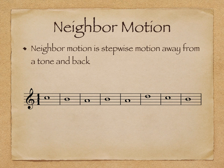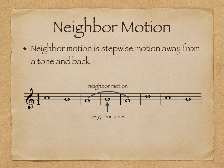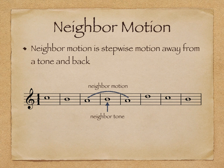Another type of motion is neighbor motion — stepwise motion away from a tone and back again. In our example, we have neighbor motion in the middle of our melody, from A to B and back to A again. All three tones are involved in the neighbor motion, and the center tone — B in this case — is called the neighbor tone. Generally, the two outer tones will be stable pitches, with an active tone acting as the neighbor tone.